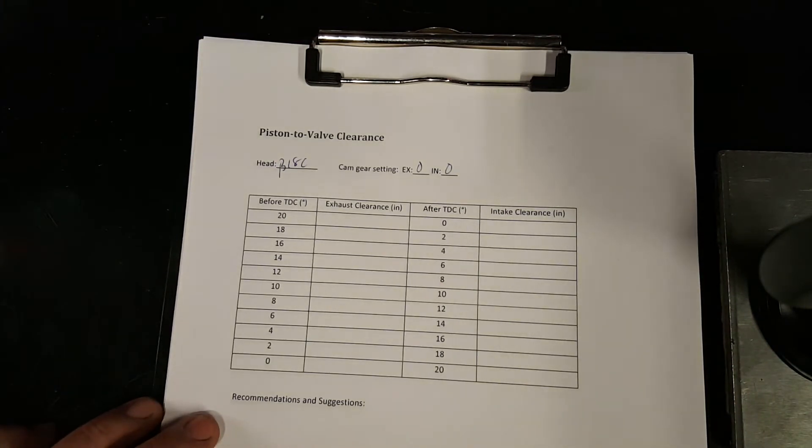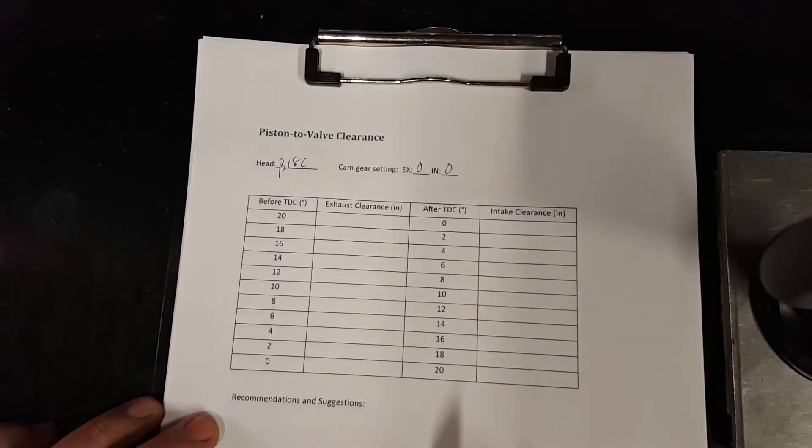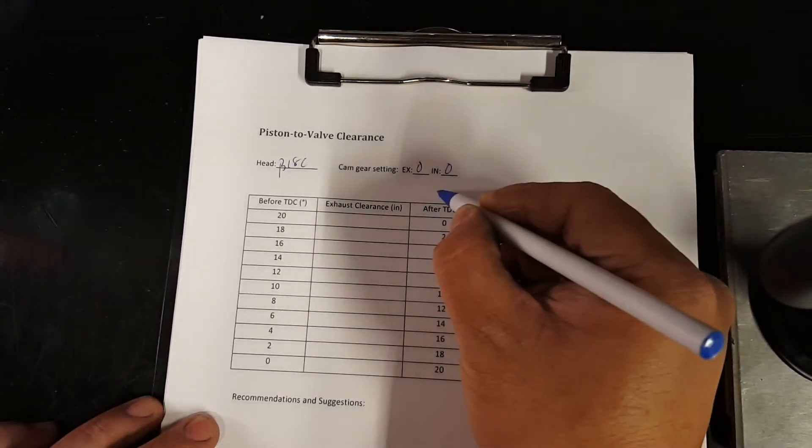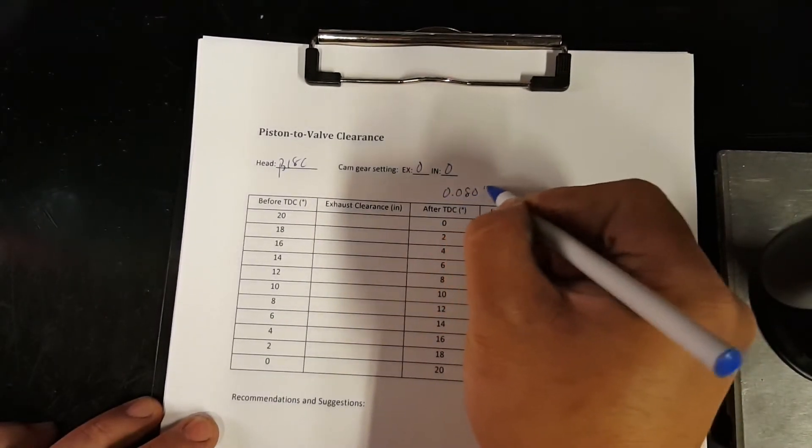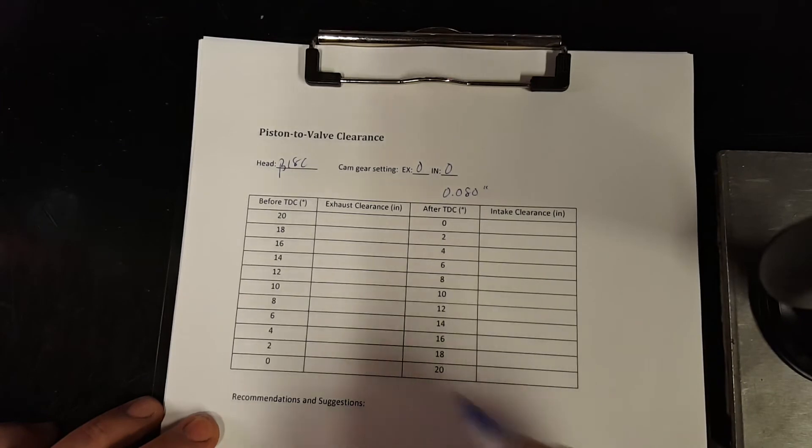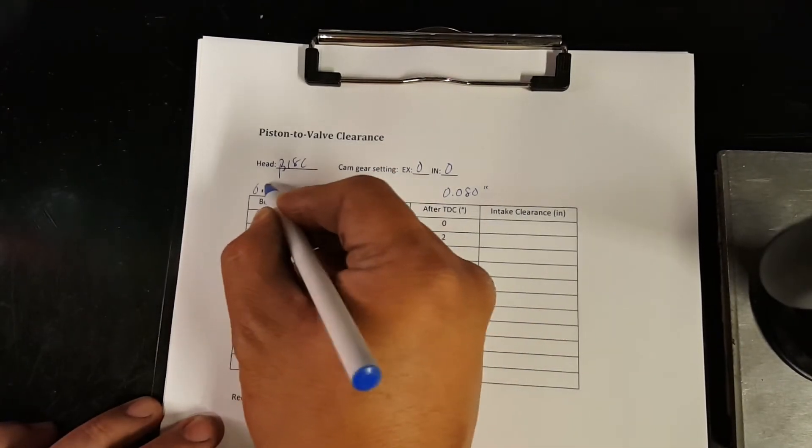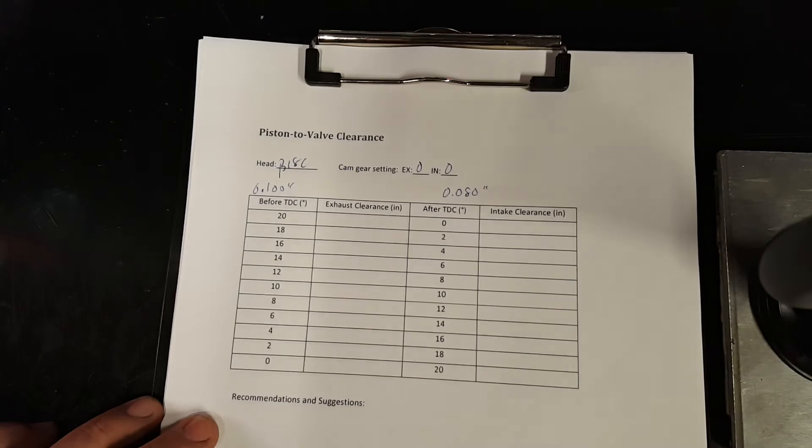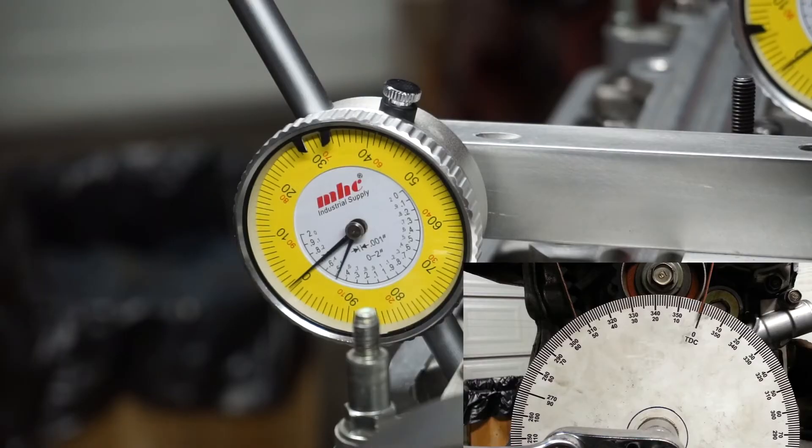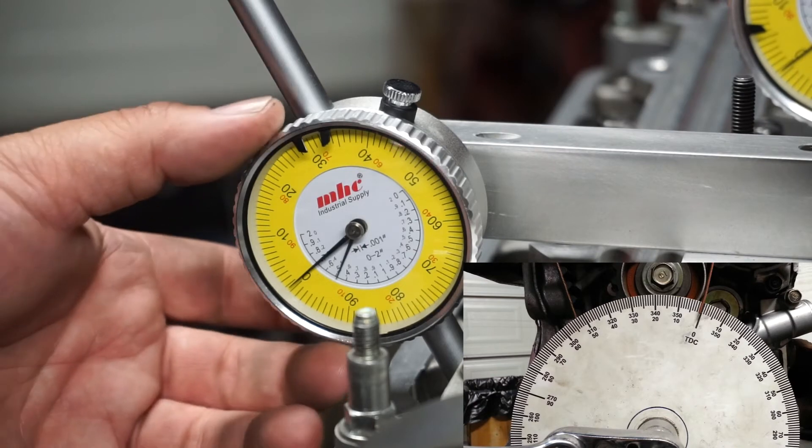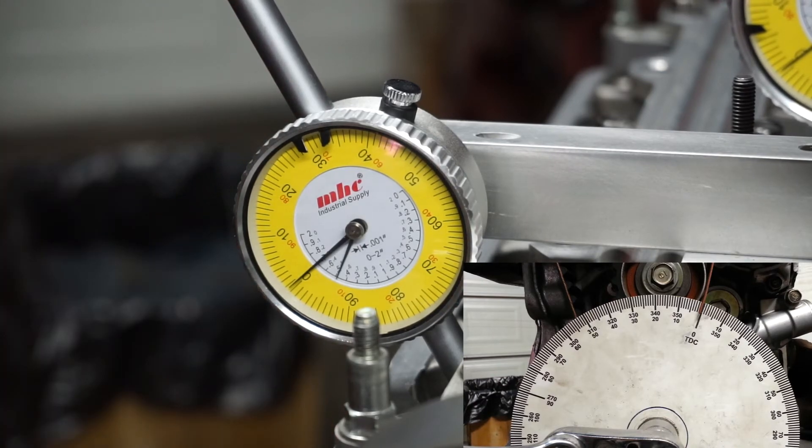A rule of thumb that I use is usually you want 80 thousandths clearance for intake side and you want at least 100 thousandths clearance for exhaust side. First off, we'll start with the exhaust side. Here I have it set and we'll rotate it to where it is 20 degrees before top dead center and take note every 2 degrees difference to get all my clearances.